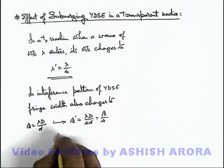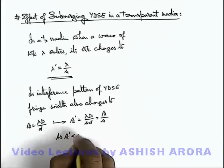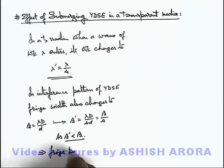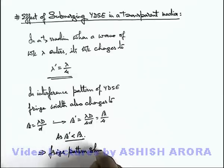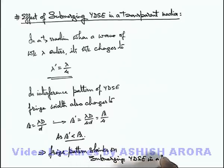So here we can see that beta prime is less than beta. This implies the fringe pattern shrinks on submerging the YDSE setup in a transparent medium.